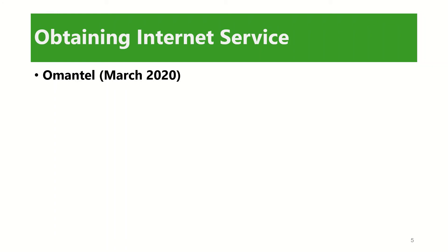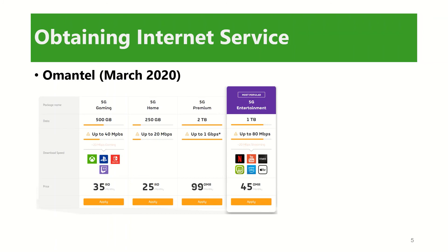Let us check the two internet service providers available in Oman. The price list is dated March 2020. OmanTel is now offering 5G technology, and as you can see in the illustration, the most popular is the 5G entertainment plan. You can have as much as one terabyte of data, with a maximum download speed of 80 Mbps and an additional 20 Mbps for streaming, at a cost of 45 Omani rials.